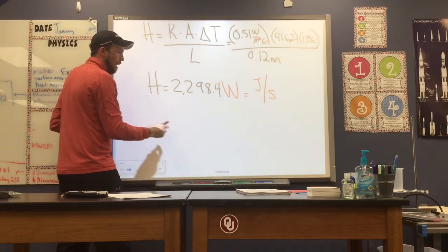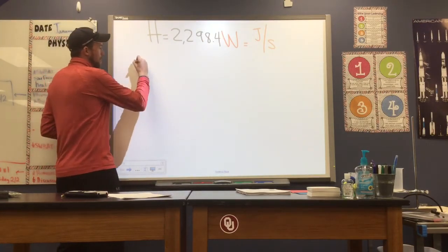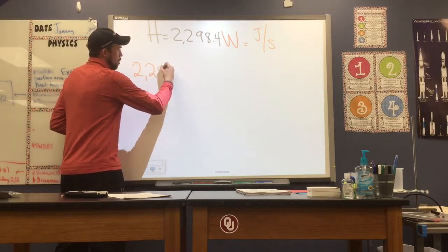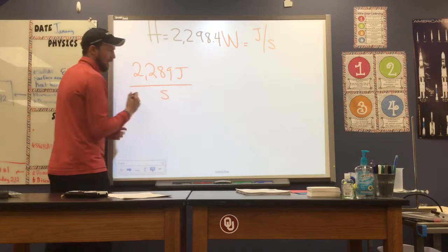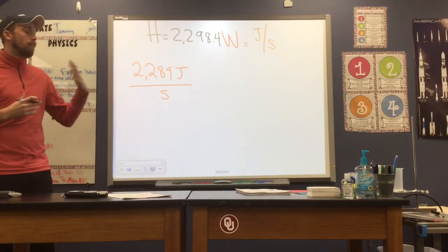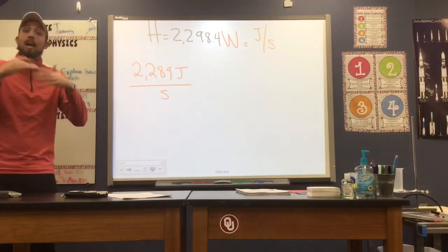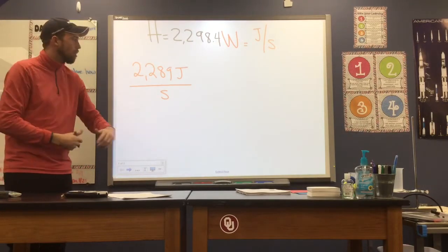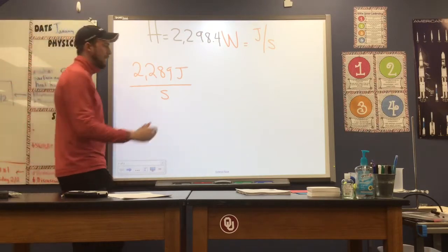So now that we have this value, we need to convert it to the time value that we're provided with. So 2,289 joules per second. And what I'm going to do is I'm going to convert that to joules per hour, and I'm going to multiply by the time value that we're given, 12.9 hours, to figure out the total amount of joules we have passing in that time period.